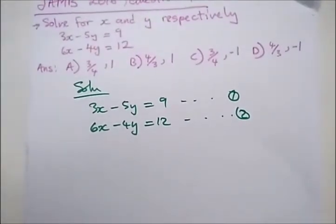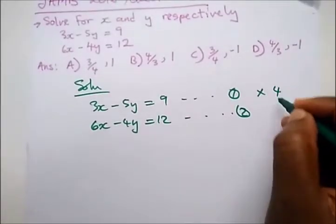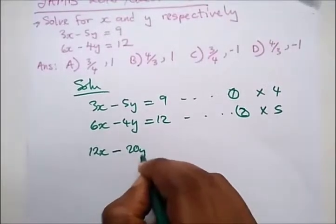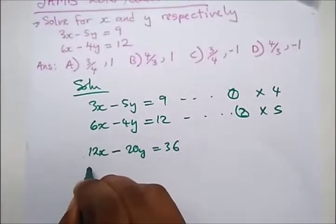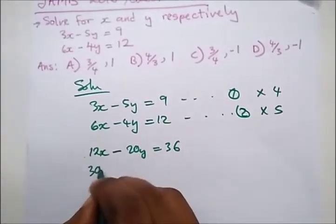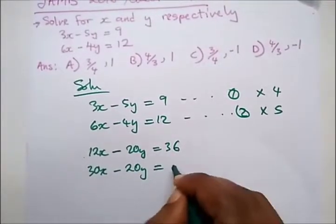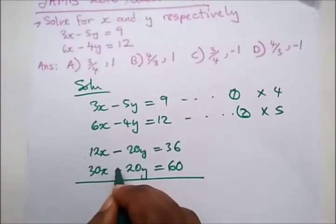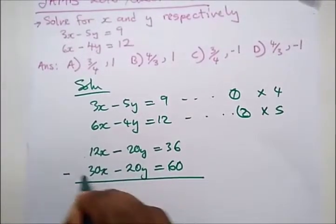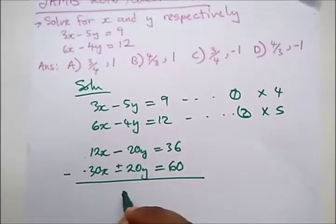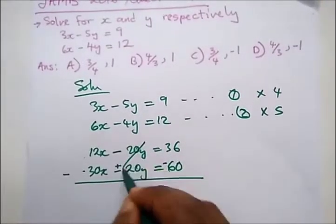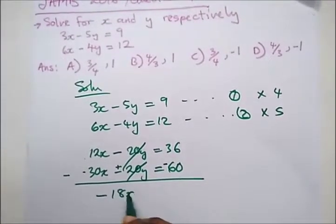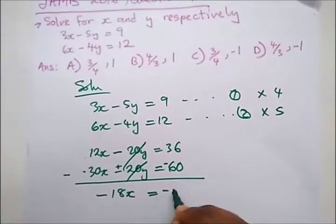Let's cancel out y. We multiply equation 1 by 4 and equation 2 by 5. This gives us 12x minus 20y equals 36, and 30x minus 20y equals 60. To cancel the y terms, we apply a negative sign to the second equation. Then 12x minus 30x gives us minus 18x, and 36 minus 60 gives us minus 24.